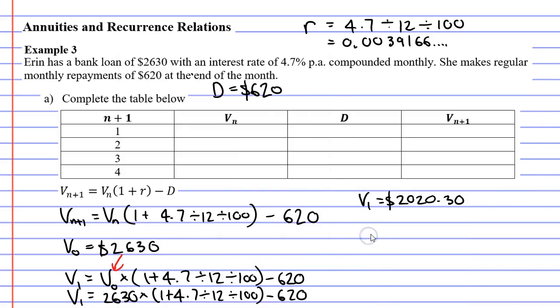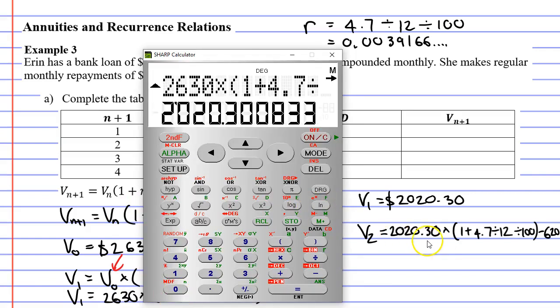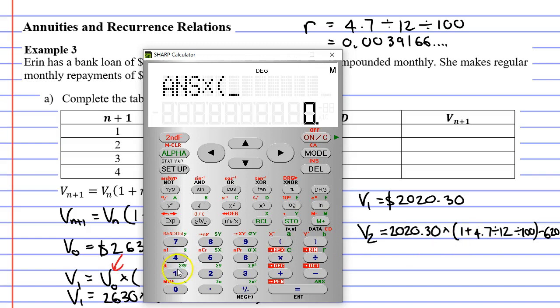Let's now move on to V_2. V_2 equals V_1. Now, rather than writing V_1 down, I'm going to take a shortcut. I already know what V_1 is. It's $2,020.30. Next to this, I'm going to write down the calculations I can see here, because these calculations repeat each time. So we'll bring up our calculator. You'll notice that the first value in our calculation is already on our calculator, and the good thing is that we haven't rounded this number yet. So let's keep this number on the calculator. We're going to go multiply, and then brackets, 1 plus 4.7 divide 12 divide 100, then close our brackets, minus 620, and we get $1,408.21.